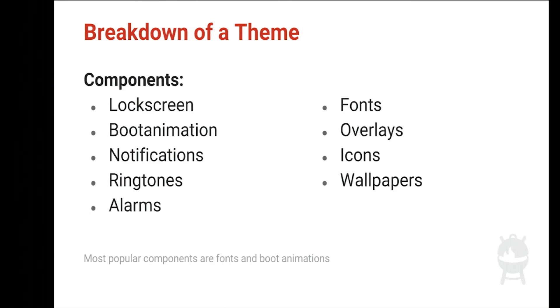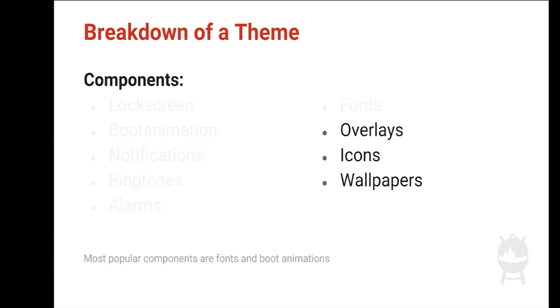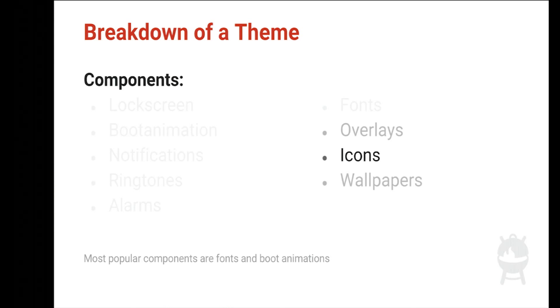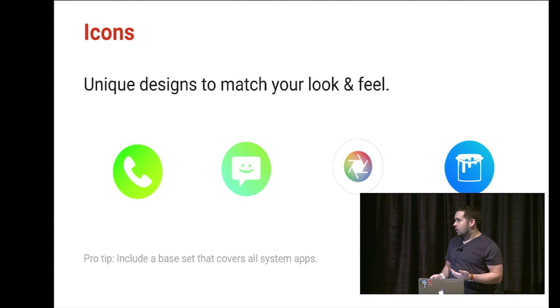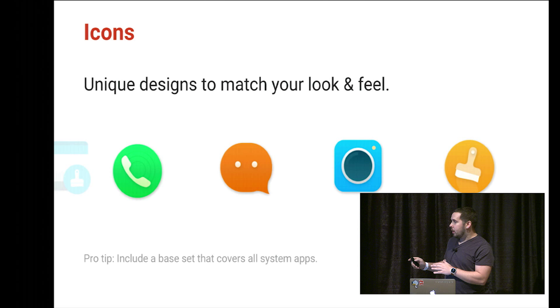Of all these components, the ones with the biggest visual impact are overlays, icons, and wallpapers. In our latest 12.1 release of Cyanogen OS, you can include multiple wallpapers that users can choose from in the theme chooser. Icons are a huge part of the visual landscape since that's how users interact with apps. With themes, you can create unique icon sets that match the rest of the look and feel — however your imagination wants to go, crafting each one individually.